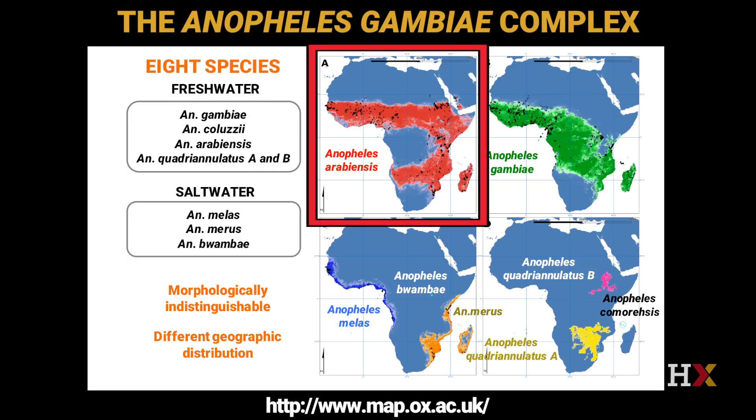Anopheles arabiensis is a third important malaria vector that shares habitats with Anopheles gambiae and Anopheles coluzzii. Until recently, this species was not considered a very important vector for human malaria, because these mosquitoes also feed on animals apart from humans, diluting potential infectious bites. However, because of their plastic behavior — the fact that these mosquitoes can feed and rest outdoors as well as indoors — they become more difficult to control with current vector control strategies. And so, in recent years, they've become more and more relevant for malaria transmission.